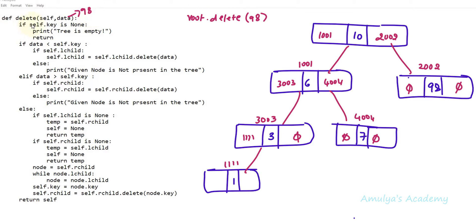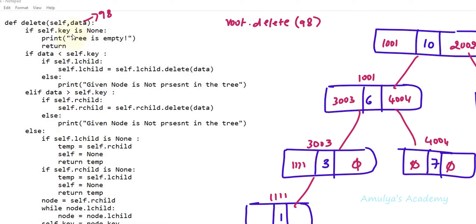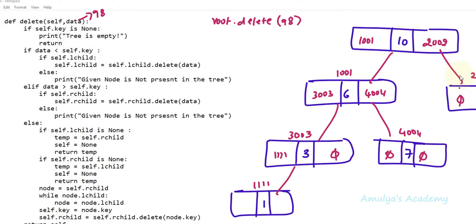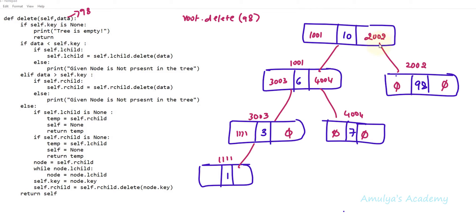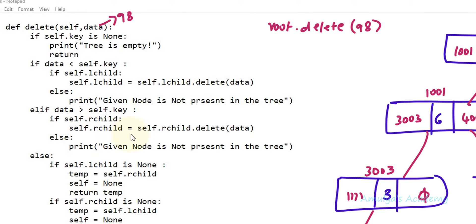Here data is 98 and self is the root. First it checks if root.key is None — no, root.key is 10. So it checks if data is less than self.key: data is 98, self.key is 10, so 98 is not less than 10, that condition is false. It goes to elif and checks if data is greater than self.key — true, because 98 is greater than 10. So it checks if self.rchild is present — yes, self.rchild is not None.